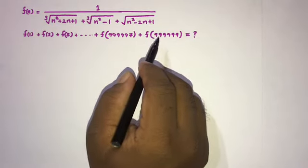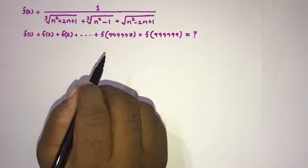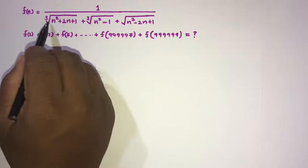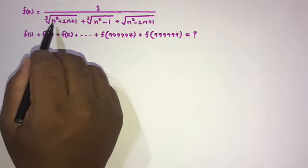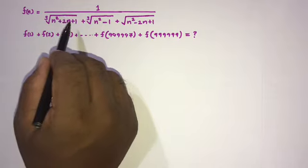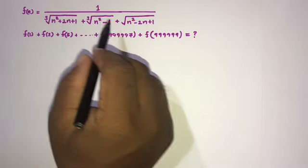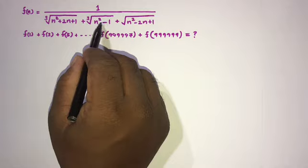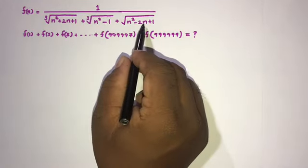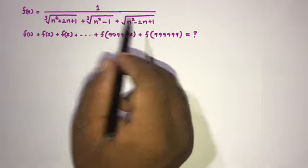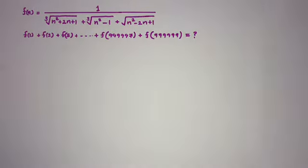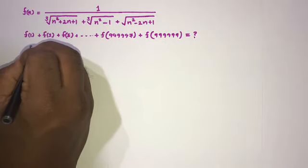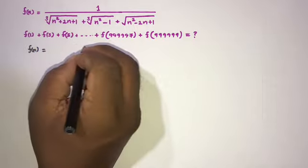How to begin? Well, first if you look carefully, the expression under the cube root in the numerator factors nicely: n² + 2n + 1 is (n+1)², the middle term is a difference of squares (n-1)(n+1), and the last term is (n-1)². So we can rewrite f(n) using these factored forms.